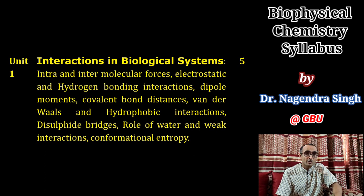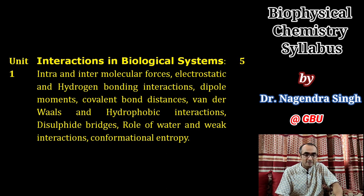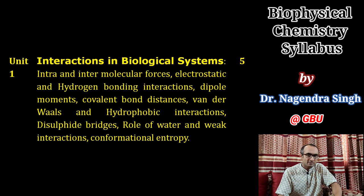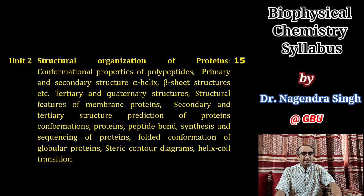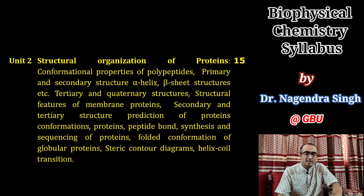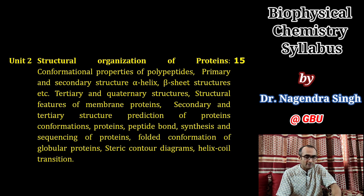Unit 1 covers weak non-covalent interactions including hydrogen bonds, ionic interactions, salt bridges, van der Waals forces, the role of water in the stability of proteins and other macromolecules, and conformational changes. For example, when a protein is synthesized during translation, it acquires a globular shape — the kinetics and dynamics of this will be discussed. In Unit 2, we'll have a detailed understanding of structural organization of proteins and polypeptides: primary, secondary, and tertiary conformational properties, peptide bond synthesis, sequencing, Ramachandran diagrams, and helix-coil transitions.